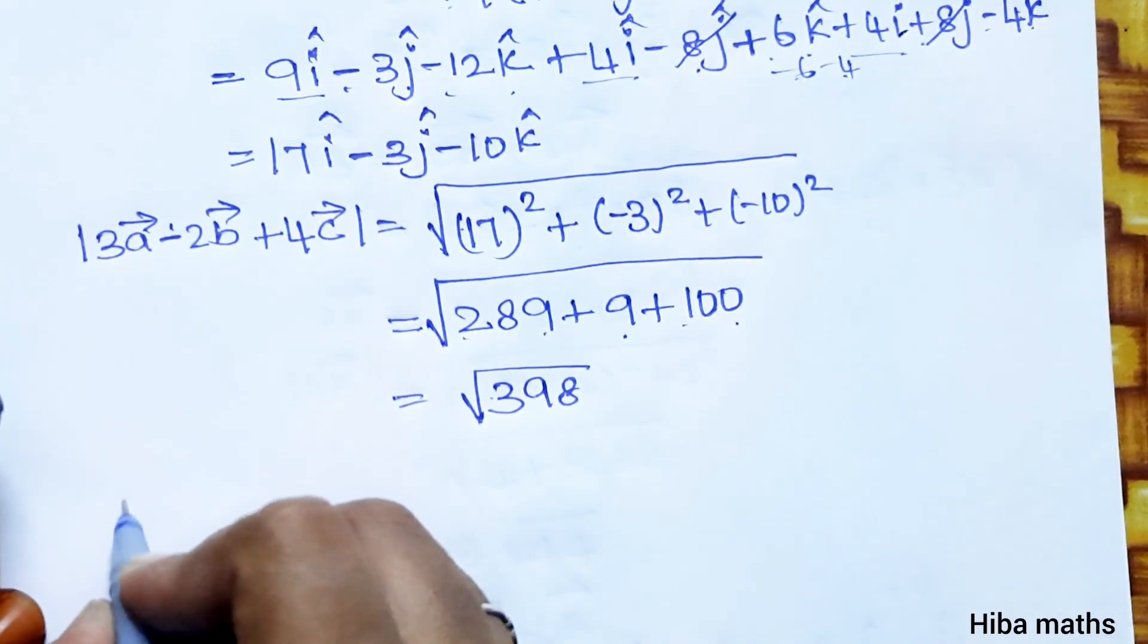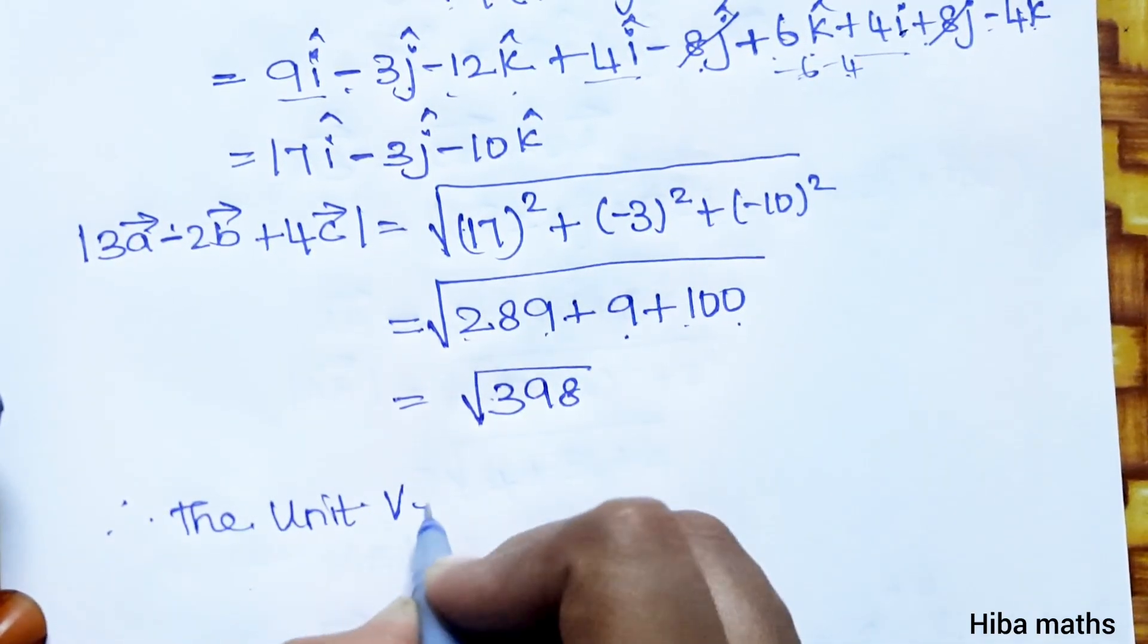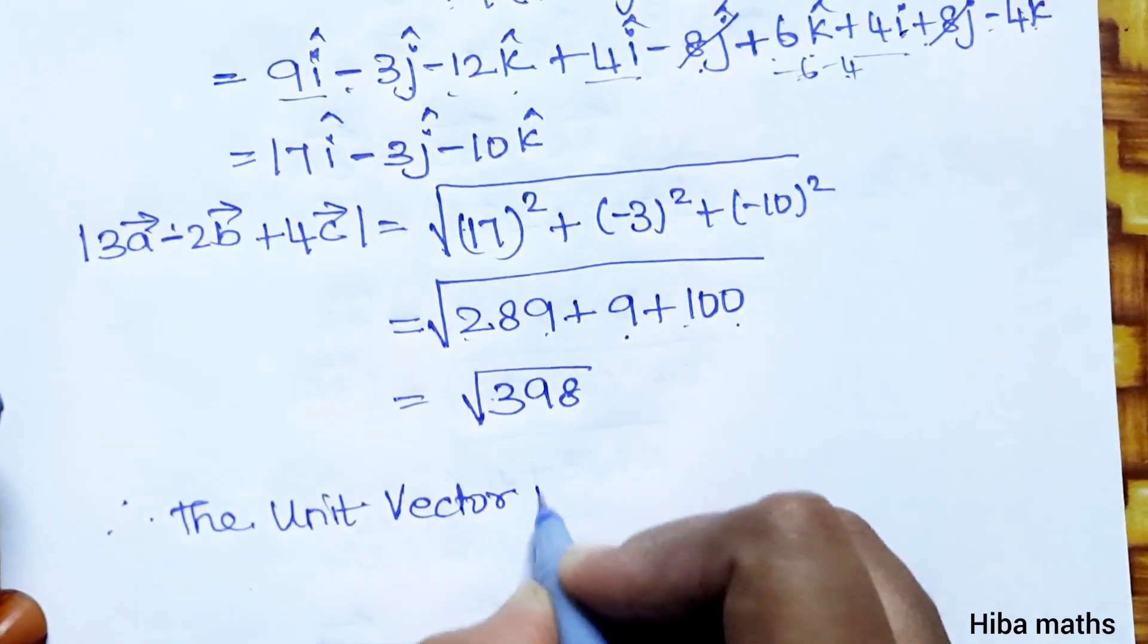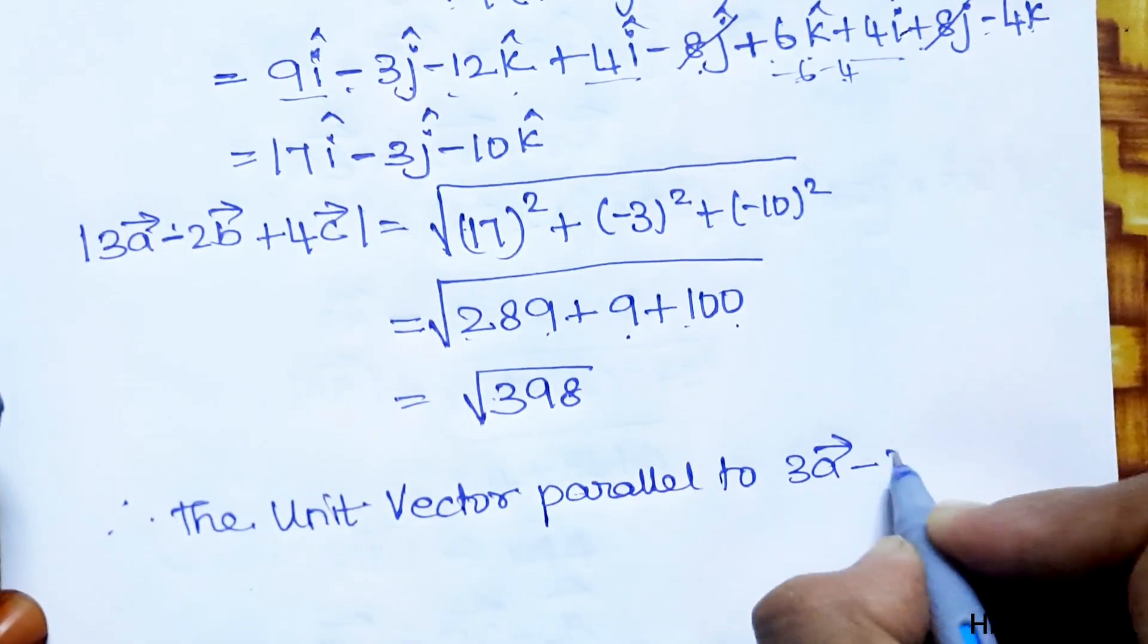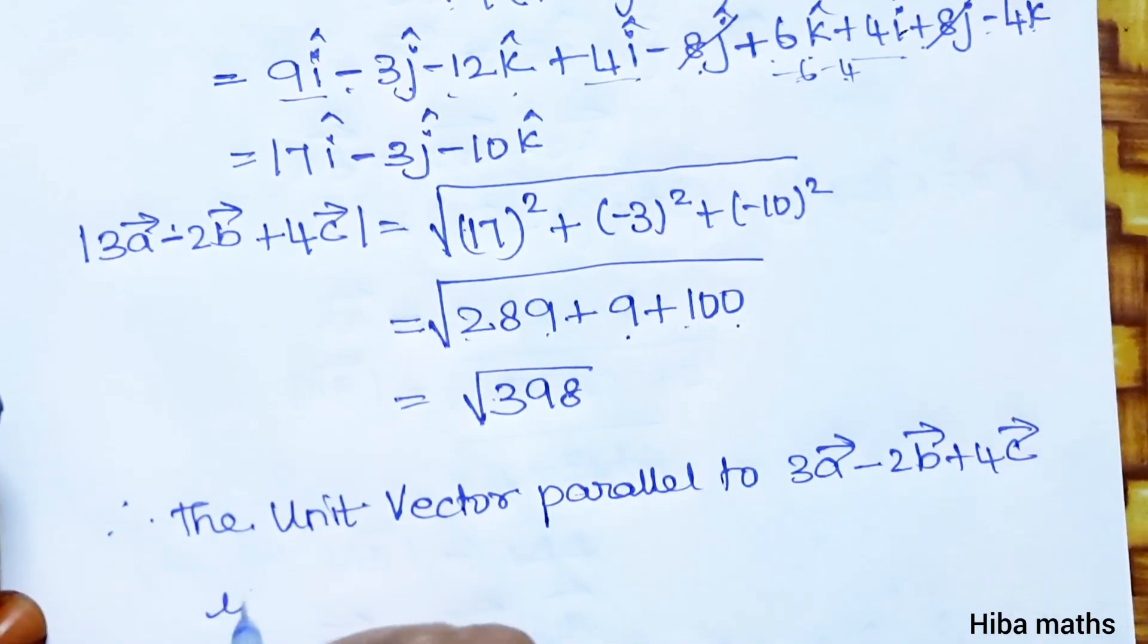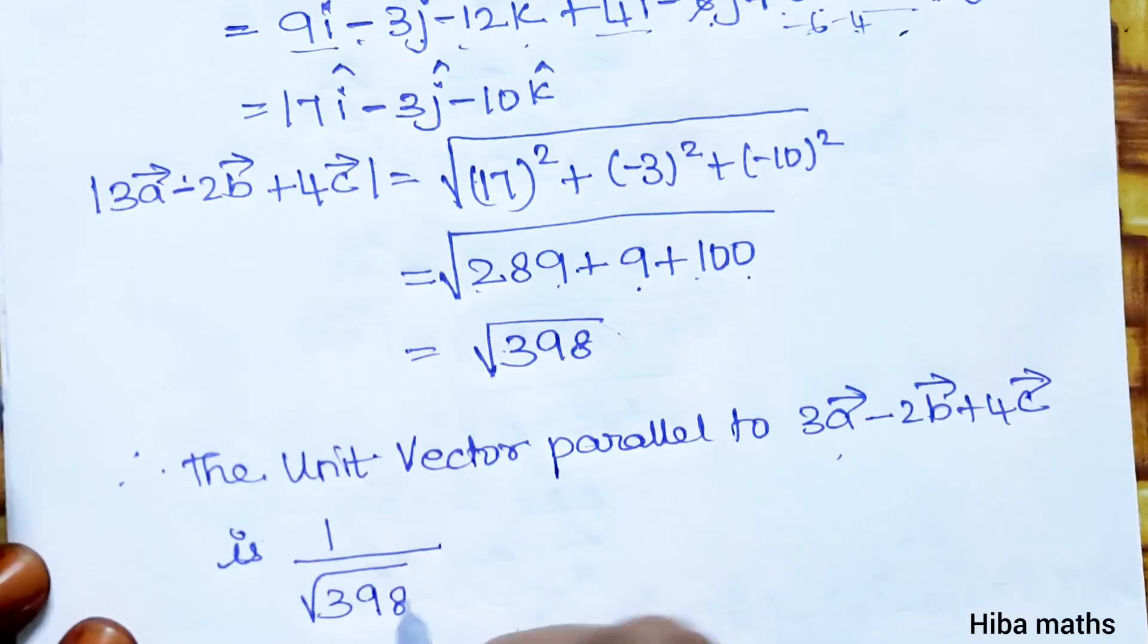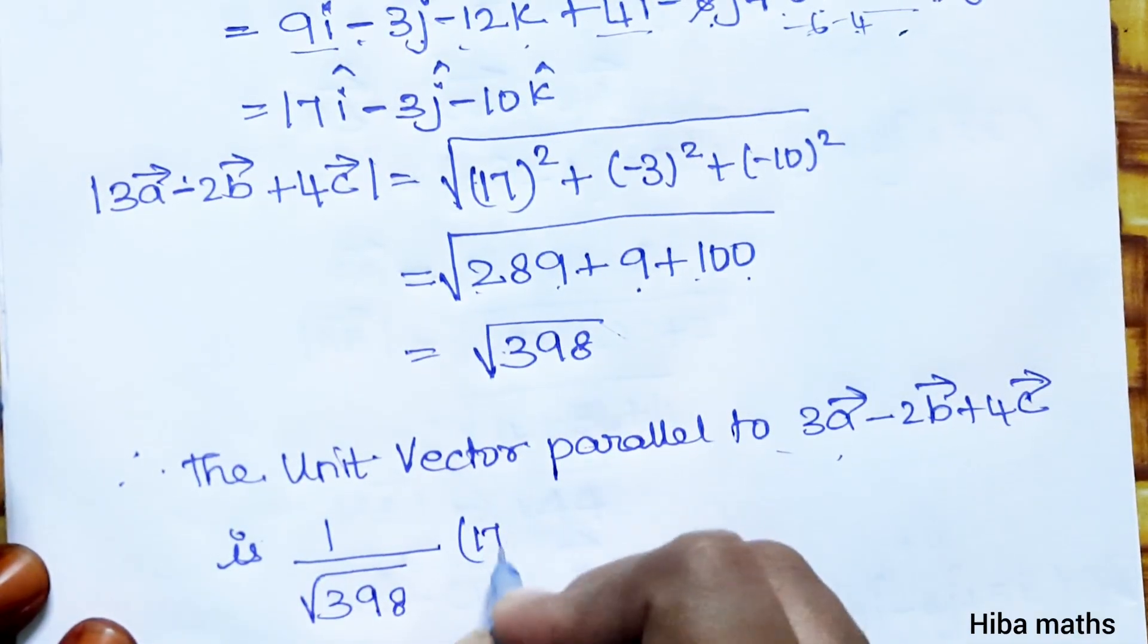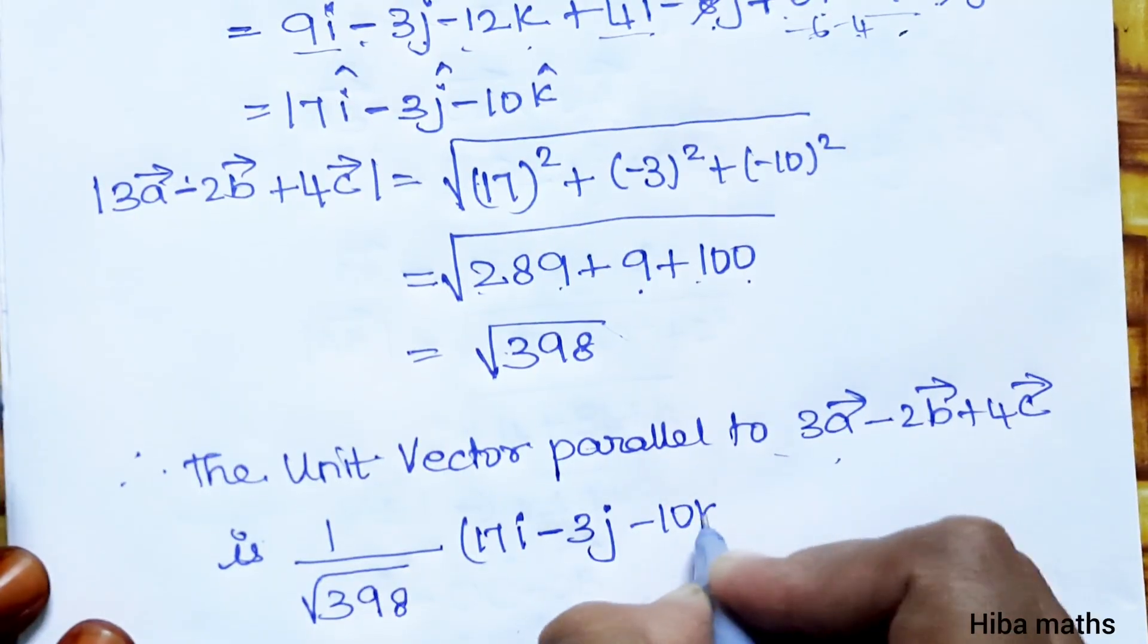Therefore, the unit vector parallel to 3A minus 2B plus 4C is equal to 1 over square root of 398 times the vector 17i minus 3j minus 10k.